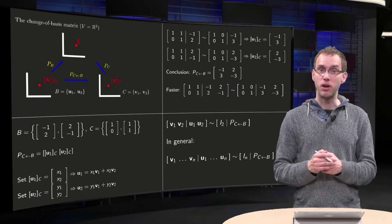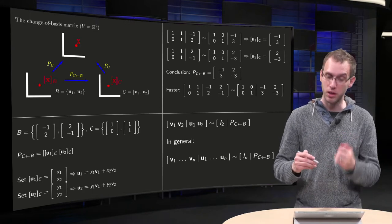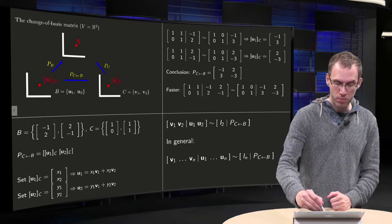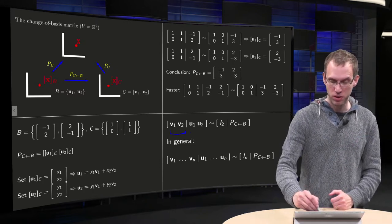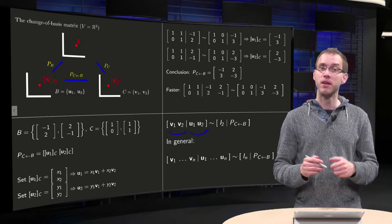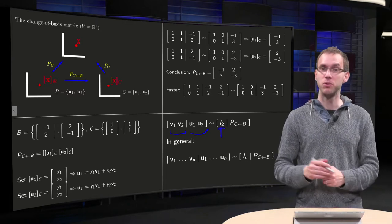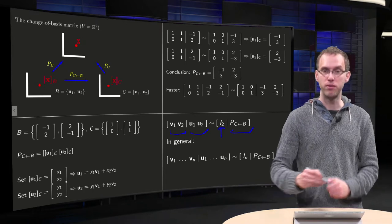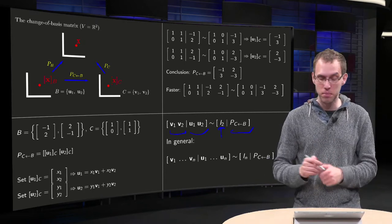So in general, how can you find your p from b to c, what can you do in general? You put your basis c, and you augment with your basis vectors from b, and then you do row reduction into u1 at the identity matrix i2, and then you have found your p from b to c. So if you have a larger basis, it works exactly the same, of course.